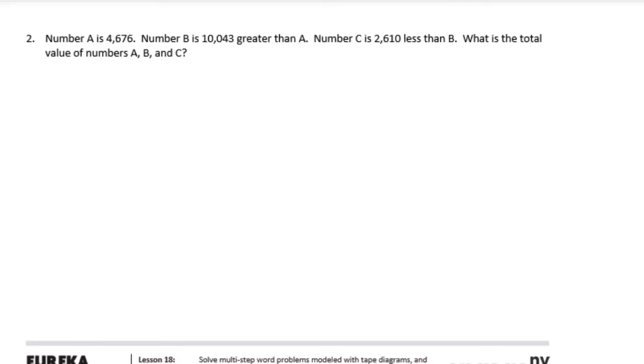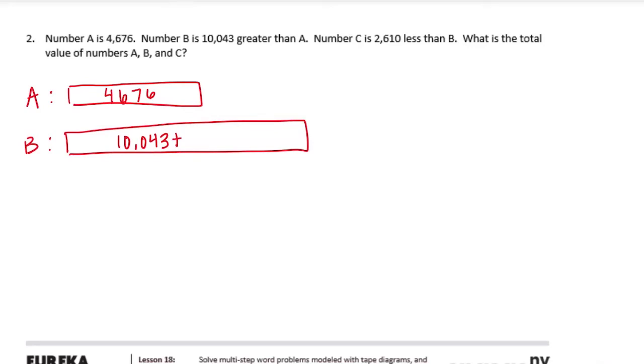So let's start with A. So A is 4,676. B is 10,043 greater than A. Let's figure out what B is if we have A plus 10,043. So 10,043 plus 4,676. 3 plus 6 is 9. 4 plus 7 is 11, carry the 1. 1 plus 0 plus 6 is 7, 0 plus 4 is 4, and 1 plus nothing is 1. So B is 14,719.